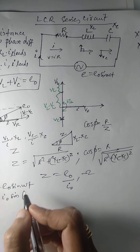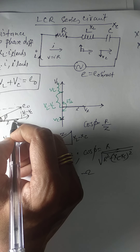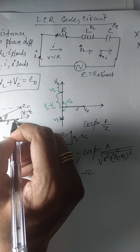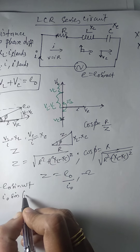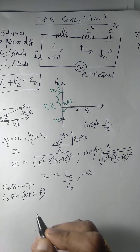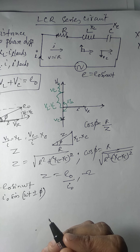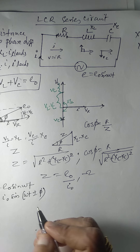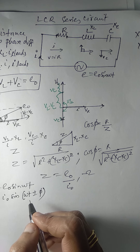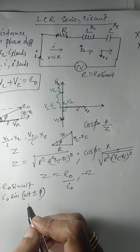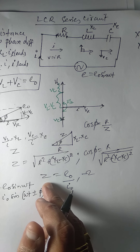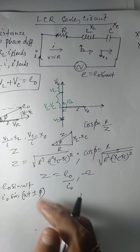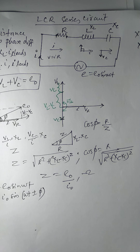For a resistor, the phase difference is zero. For a capacitor, I is leading. For an inductor, I is lagging. Depending on whether an inductor, capacitor, or resistor dominates, the current is I = I₀ sin(ωt ± φ). This is how we analyze an AC LCR circuit. Thank you.